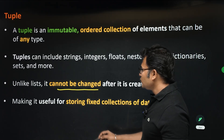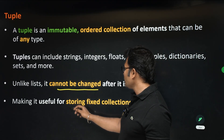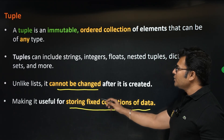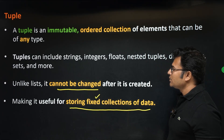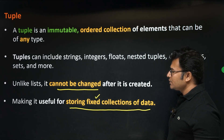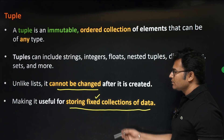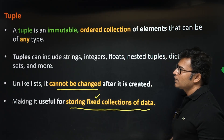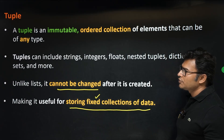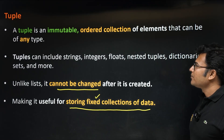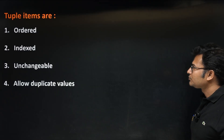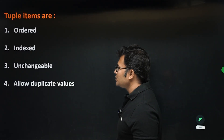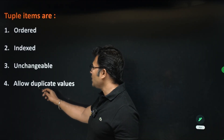Tuples are useful for storing a fixed collection of data. If you already know that the data size doesn't change, going for a tuple is a good choice; otherwise go for lists. Tuples are ordered, indexed, unchangeable, and they allow duplicate values.